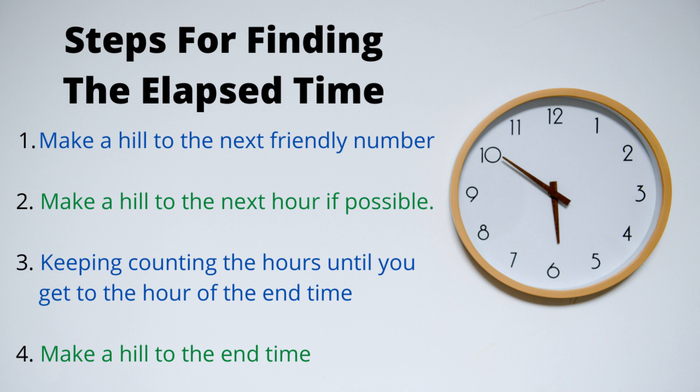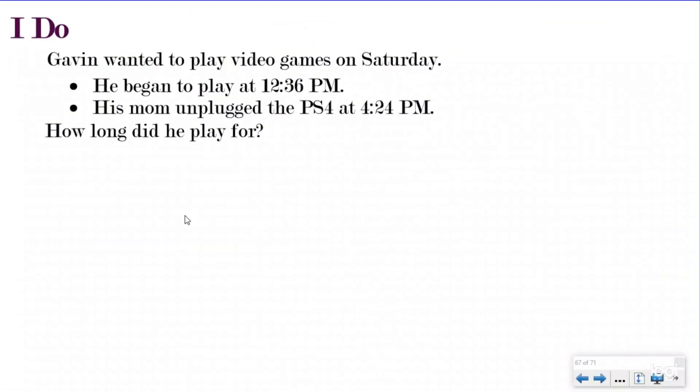Now, that might have been confusing, so let's do an example problem together. Our I do problem. So go ahead and just watch me do this problem. It's not in your notes, so that way you can kind of see my strategy. So we know here at Instructor Beats, we love our SIDES check strategy. So the first thing we're going to do is we're going to write a statement. My question asked me, how long did he play for? So my statement's going to say, he played for blank time.